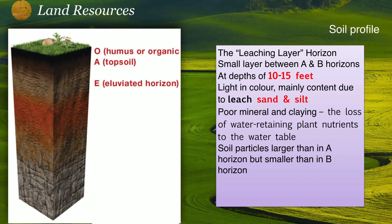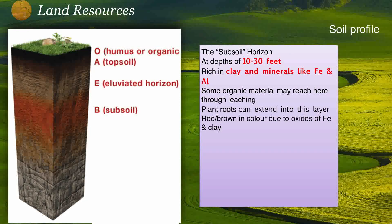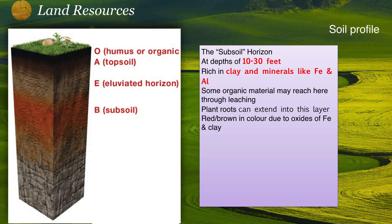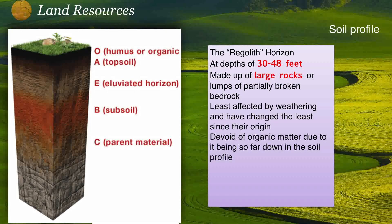Next comes the subsoil, which is the B layer, extending from 10 to 30 feet. It contains mainly clays and minerals like iron, aluminum, and copper. The color of this layer changes depending on the composition of different mineral materials. Then comes the parent material, the C layer, from 30 to 48 feet. It is composed of large rocks — big lumps of broken bedrock — and is entirely rocky.